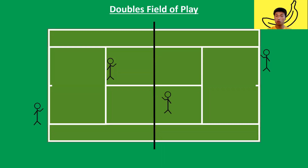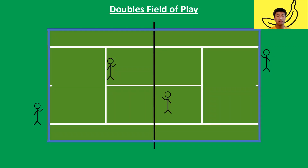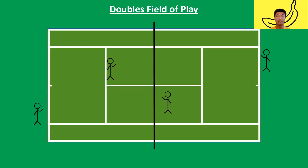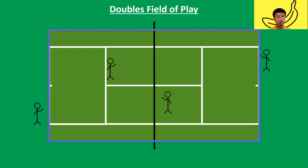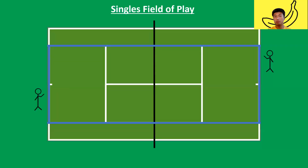For doubles, those two people on court, we play a wider court. Same thing — if you hit it out of the blue line, the field of play, you lose the point. Do note that every point starts behind the baseline. See, my stickmen are all behind the baseline.